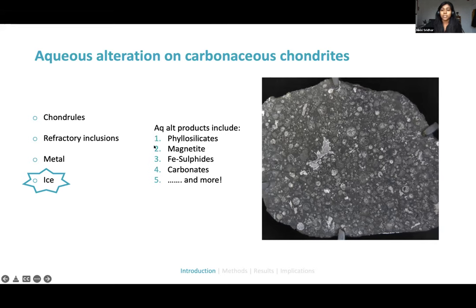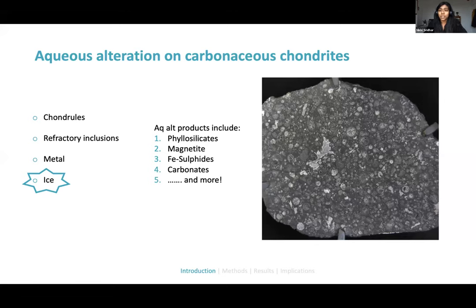This reaction forms an array of aqueous alteration products, which can include phyllosilicates, magnetite, iron sulfides, carbonates, and a lot of other interesting minerals. The process of aqueous alteration is a really important part of the history of these carbonaceous chondrites, because a lot of them have been aqueously altered — though we still don't understand a lot about it.